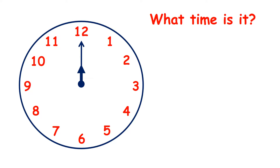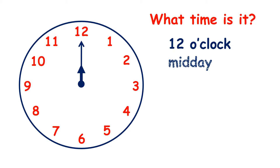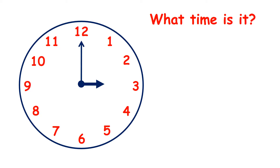What time is the clock showing here? Both hands are pointing to 12, so it's 12 o'clock. If it's in the daytime, around lunchtime or just before lunch, we can say it's midday. If it's at night, we can say it's midnight. So 12 o'clock can either be midday or midnight. We only say midday and midnight for 12 o'clock — not for any other times, even if it is the middle of the day or night.